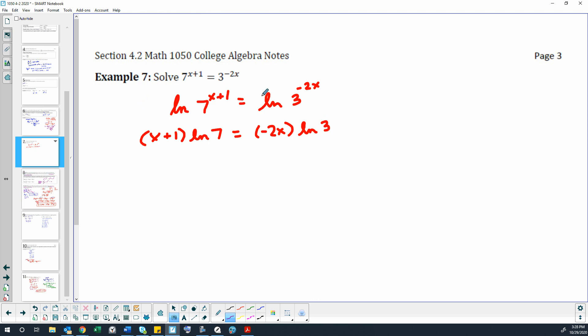So I've used the one-to-one property to take the log of each side, and then I've used the power property to move the exponents to the front as coefficients, not exactly coefficients, but as a product with the logarithms.